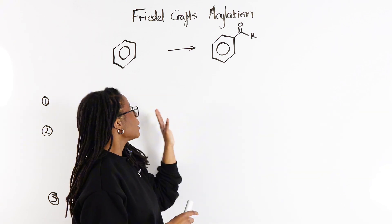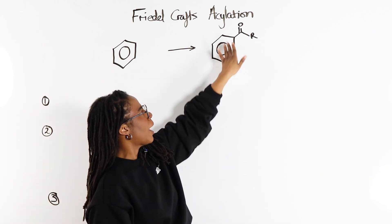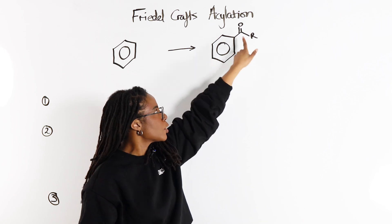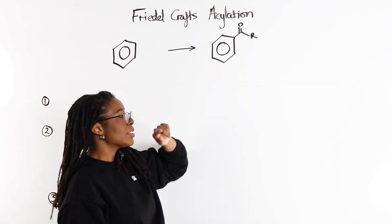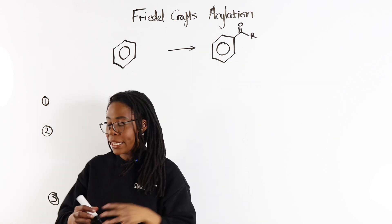And when we are trying to go from benzene to this ketone, a phenyl ketone with this C double bond O, then it's going to be Friedel-Crafts acylation.